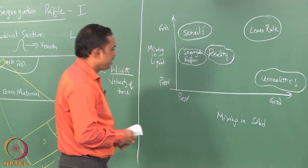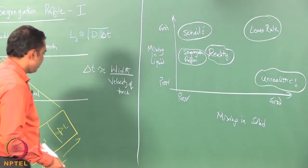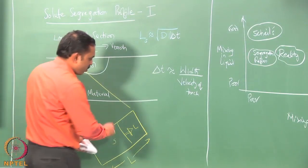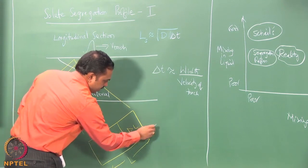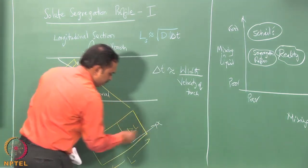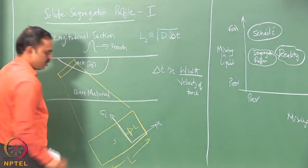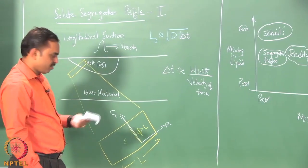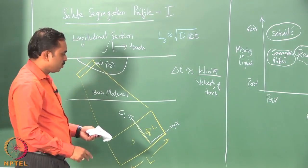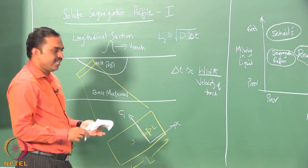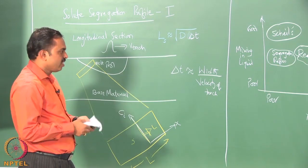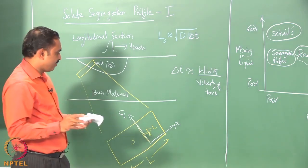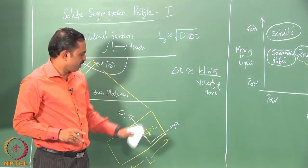The segregation profile is the composition of the solute as a function of distance along the domain. It tells us the microstructure we will get in the weldment, whether there will be banding, and whether intermetallic compounds may form in those bands. A large number of things can be derived from the solute segregation profile.